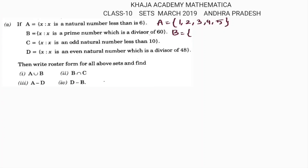Set B is defined as x which is a prime number and a divisor of 60. To find the prime factors of 60: 2 times 30, 2 times 15, 3 times 5. So the prime factors are 2, 3, and 5. Set B is {2, 3, 5}.